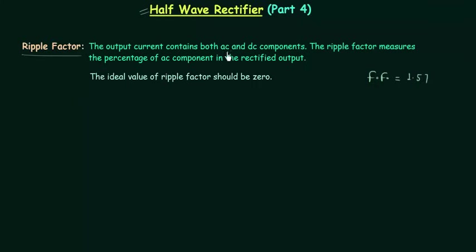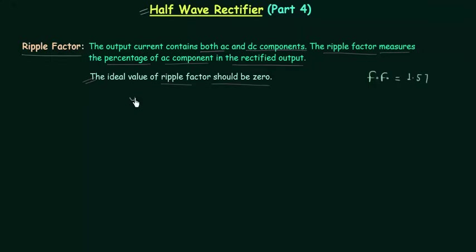The output current contains both AC and DC components. The ripple factor measures the percentage of AC component in the rectified output. Ideally the value of ripple factor should be 0 — ripple factor is represented by gamma — equal to 0%, because we want our output to be 100% DC.